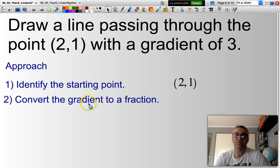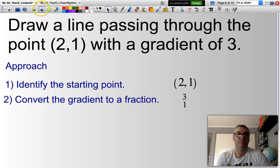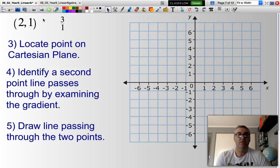Next step, we need to convert the gradient that we have been presented to a fraction. So the gradient here is 3, so 3 represented as a fraction will be 3 over 1. Right, so we're working from the point 2, 1, gradient of 3 over 1.